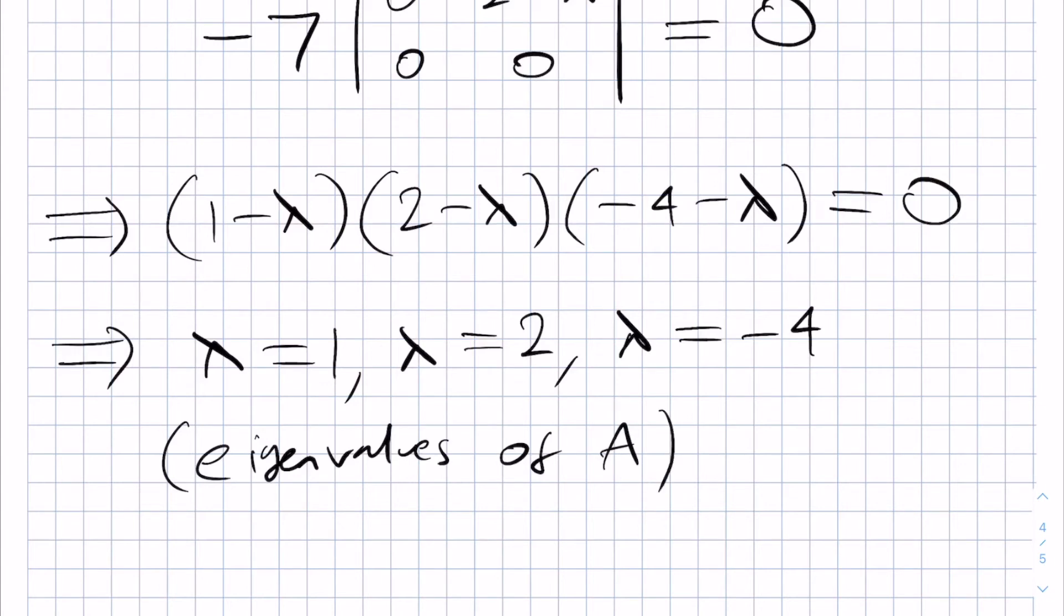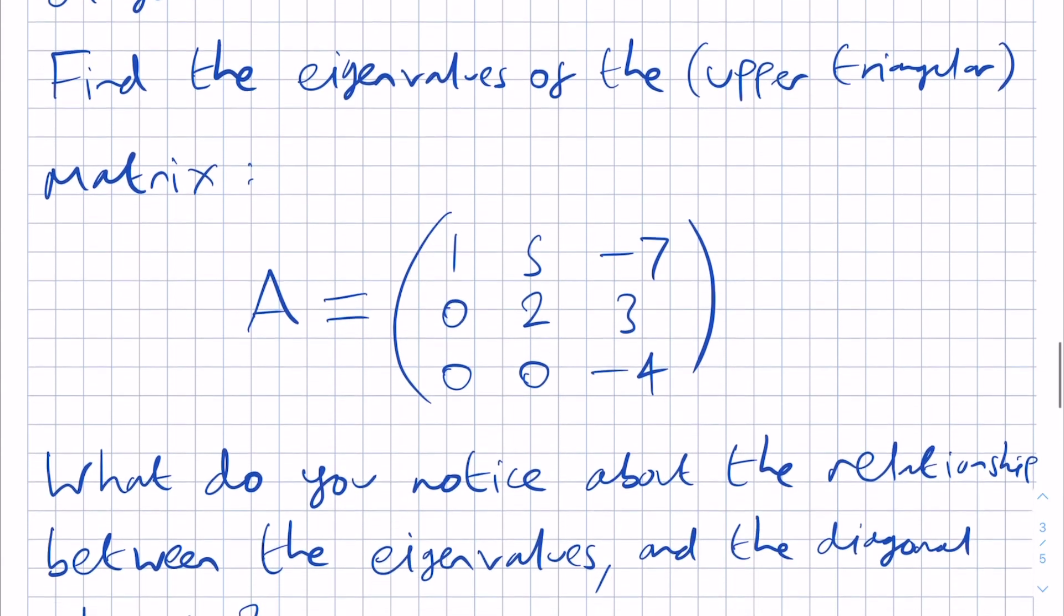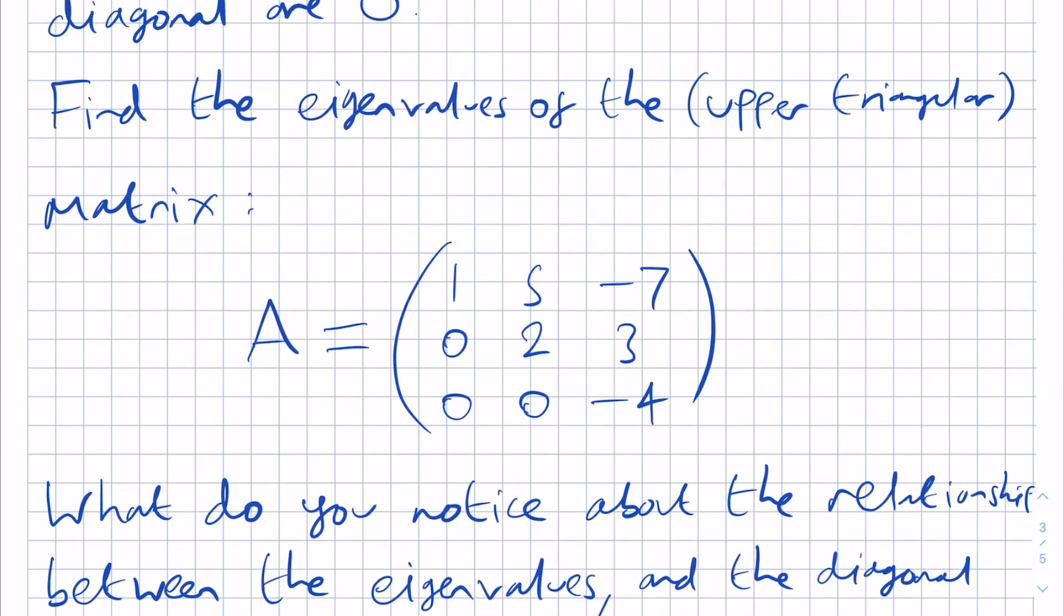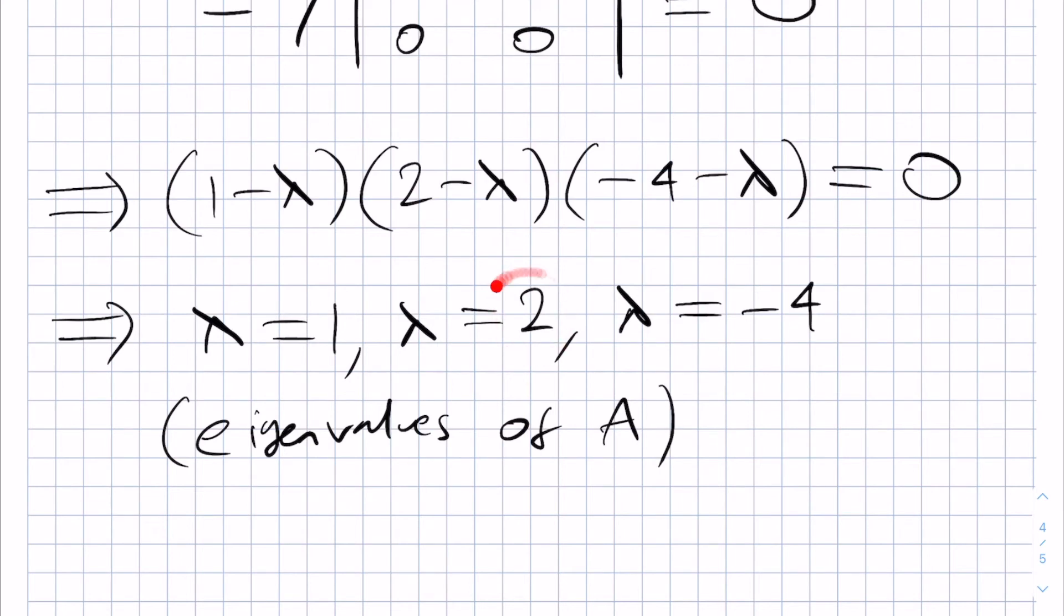Now what do you notice about the relationship between these eigenvalues and the diagonal elements of the matrix A? Well here's the matrix A. The diagonal elements are 1, 2, minus 4 and the eigenvalues are 1, 2, minus 4. And so in fact they are identical.